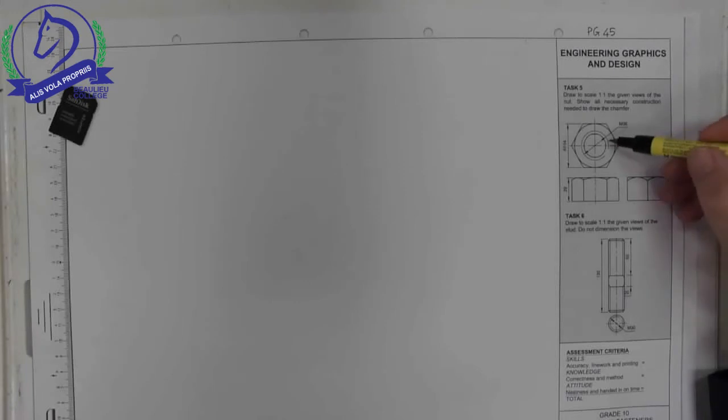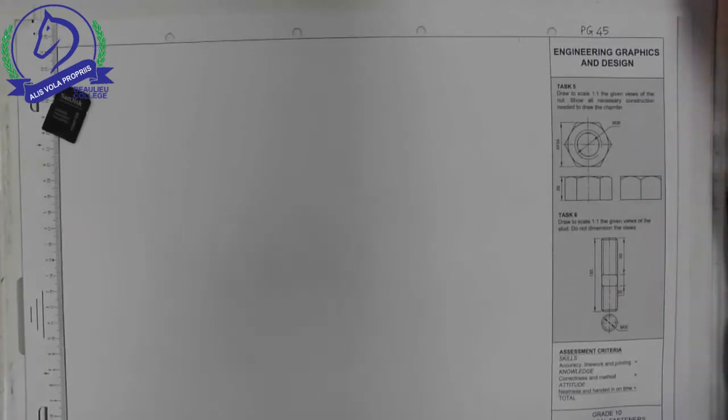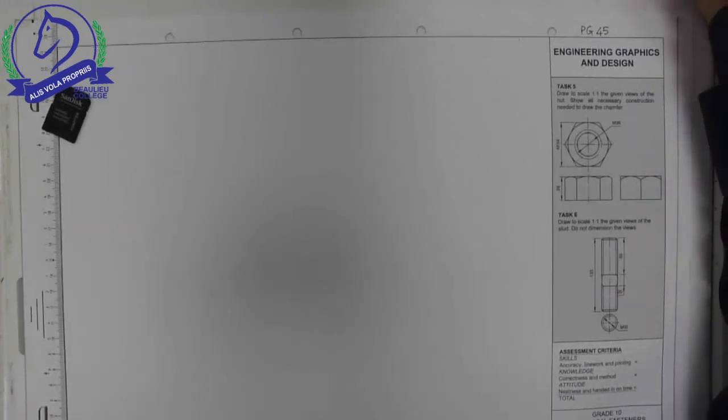This is an M36, so the arrow is indicating to this outside edge here that is a diameter of 36. So if it says M36, that also means the diameter is 36.